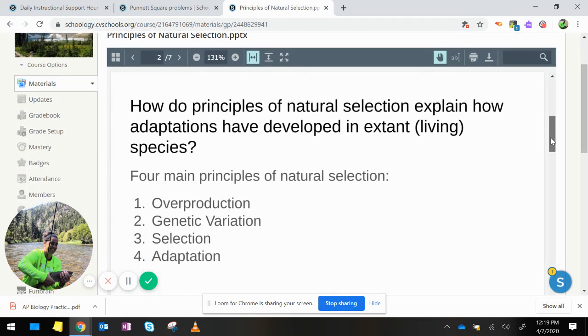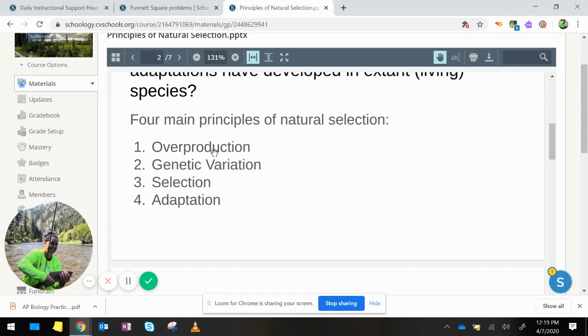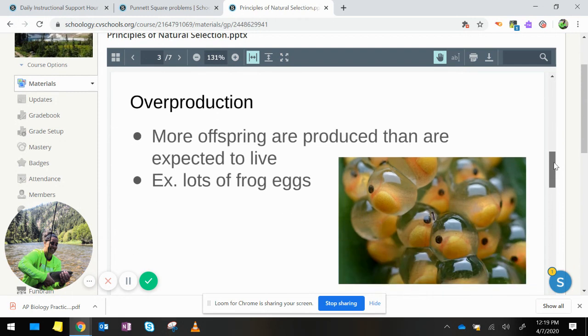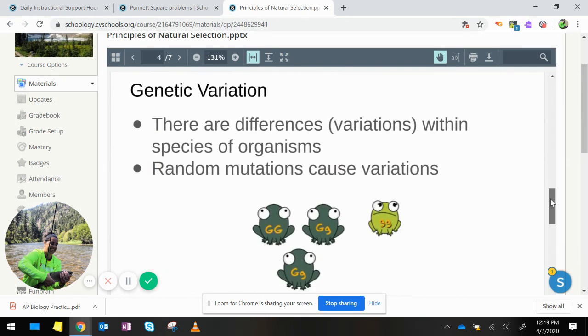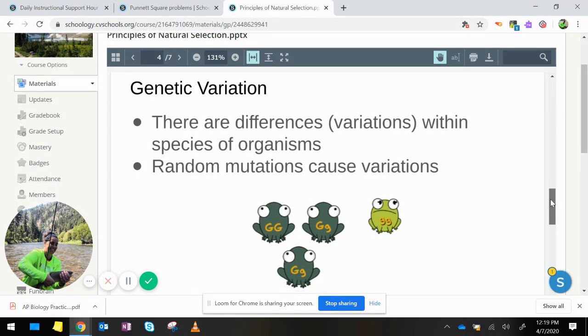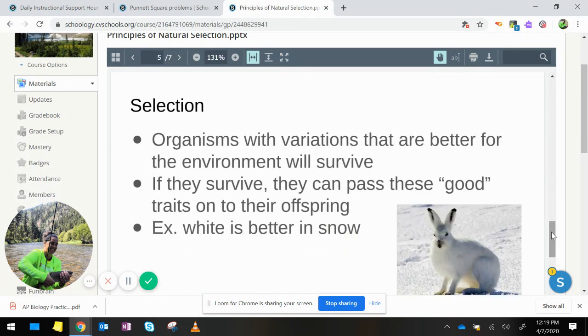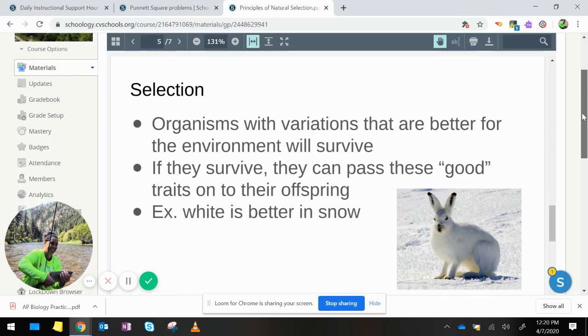The four main principles of natural selection were overproduction, genetic variation, selection, and adaptation. Overproduction means more offspring are produced than are expected to live. Genetic variation means there are differences in the species. Selection means there are environmental conditions that allow for some of the variations to be better suited for the environment than other variations.